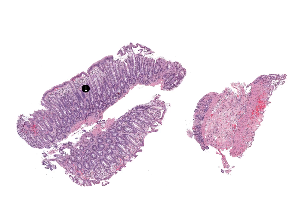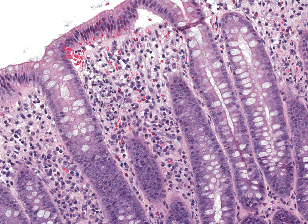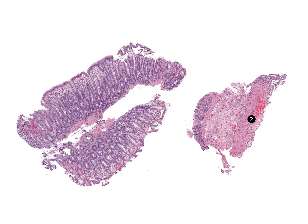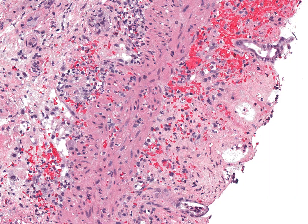Ischemic colitis is caused by compromised blood supply to the colon. For comparison, these crypts are normal in appearance. In contrast, these crypts show ischemic changes, with withered, atrophic crypts lined by irregular hyperchromatic epithelial cells that have partially sloughed.